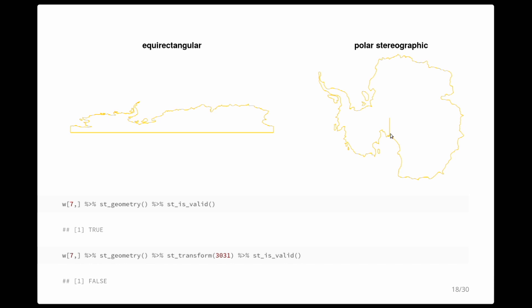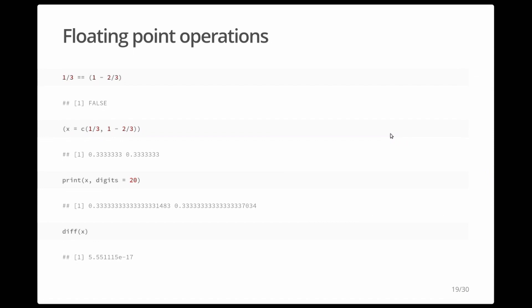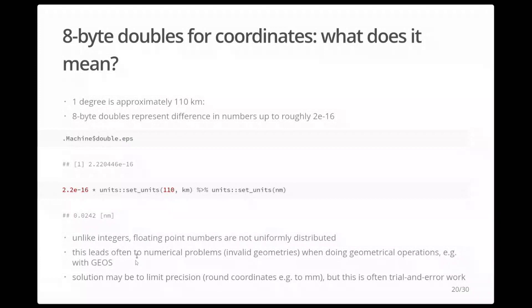Floating-point operations are a well-known issue in all programming languages: we have 64-bit doubles and must approximate irrational numbers. Two numbers may look the same but differ at very high precision. If one degree is roughly 110 km, the smallest representable difference on the equator corresponds to about 0.02 nanometers — a precision that is absurd for physical properties. This leads to many unexpected results, and the need for rounding is a bit of trial-and-error work.